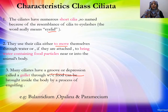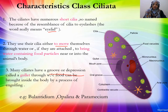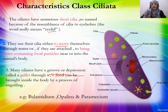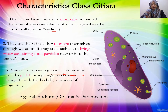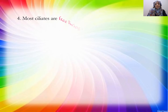Looking at the structure of Paramecium: it has an oral opening, an oral groove, and the cilia move to direct water with food particles into the oral groove and then into the body. Most ciliates are free-living.